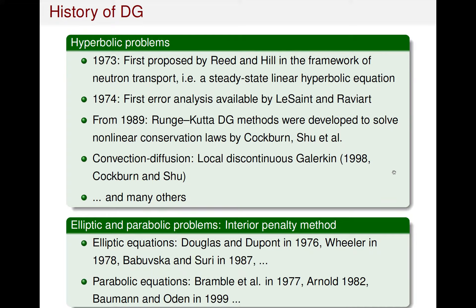Now let me review the history of DG methods. For hyperbolic problems, in 1973 the DG method was first proposed by Reed and Hill in the framework of neutron transport, which is a steady-state linear hyperbolic equation. In 1974, the first L2 error analysis was provided by Lesaint and Raviart. From 1989, the DG method was developed to solve nonlinear conservation laws by Cockburn and Shu, using DG discretization in space and Runge-Kutta time discretization, coupled with a limiting procedure to obtain the non-oscillatory property. Later, the DG method was generalized to solve convection-diffusion problems via the so-called local discontinuous Galerkin method, proposed by Cockburn and Shu in 1998.